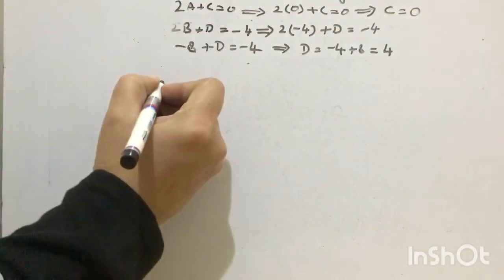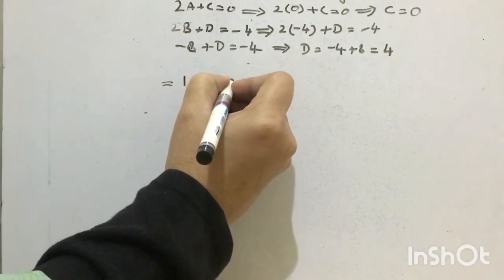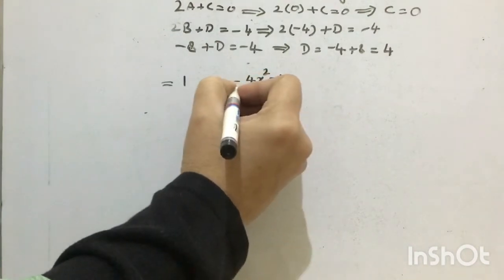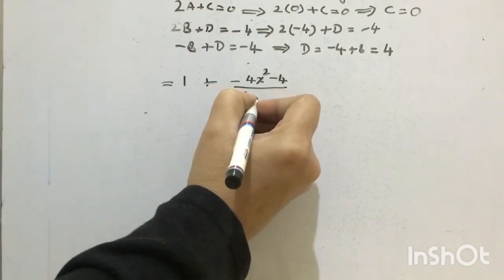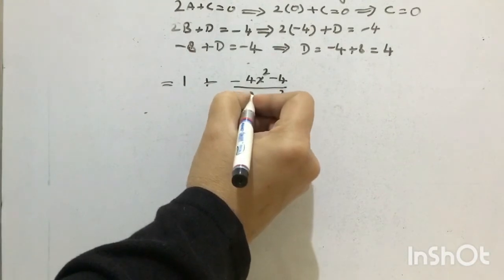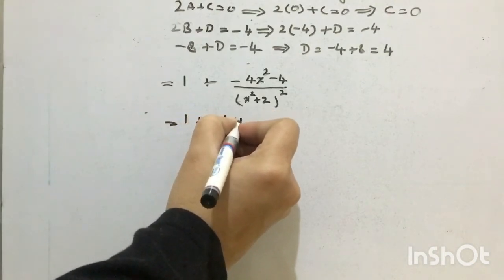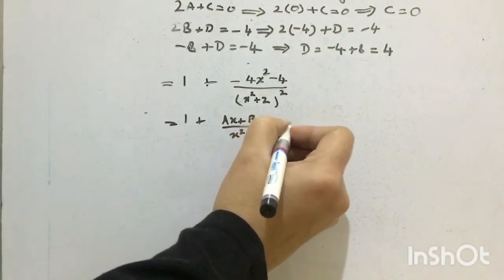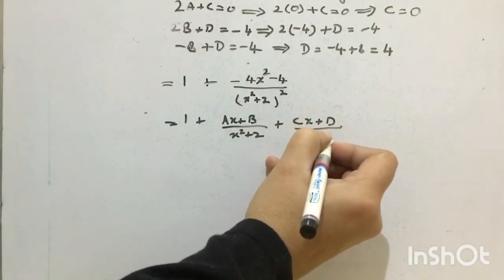Now our fraction was 1 as the whole number plus the expression minus 4x square minus 4 over x square plus 2, all squared. This was equal to ax plus b over x square plus 2, plus cx plus d over x square plus 2, all squared.